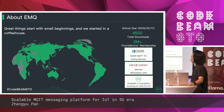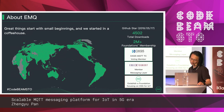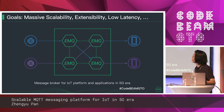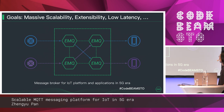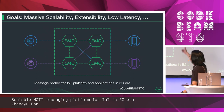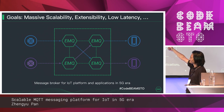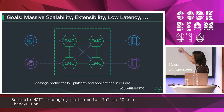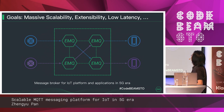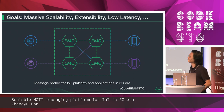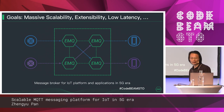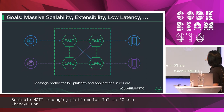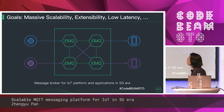According to our statistics, we have downloads from all over the world. So, what is EMQ or EMQX? It is a message broker — it receives messages, routes them, and dispatches them to another side according to subscribers. We are trying to make our broker scalable, extensible, with low latency and security, along with a lot of features.